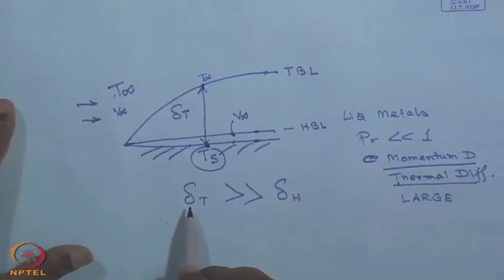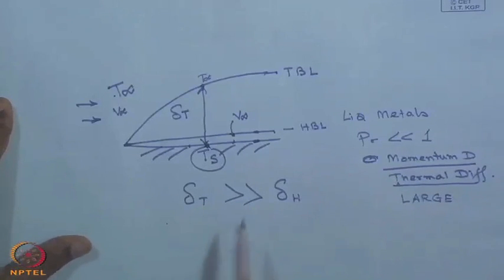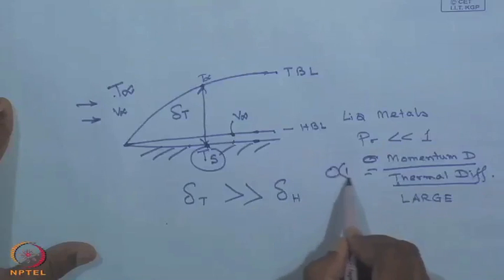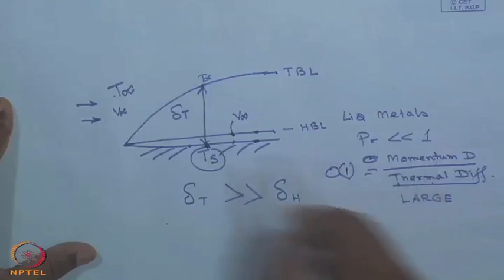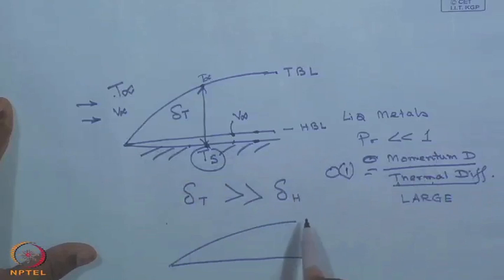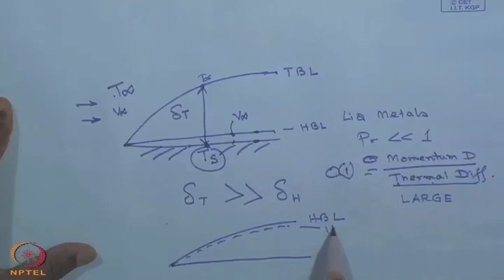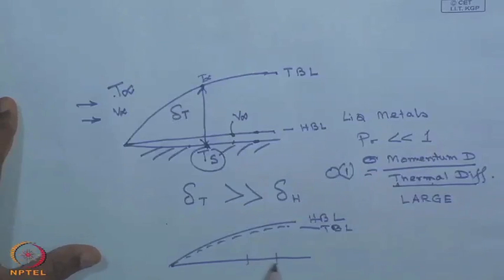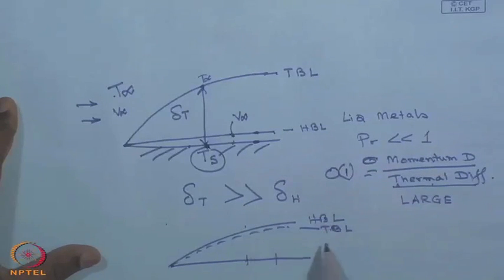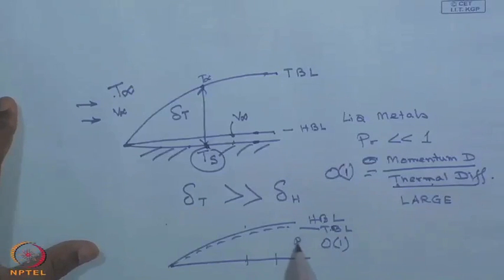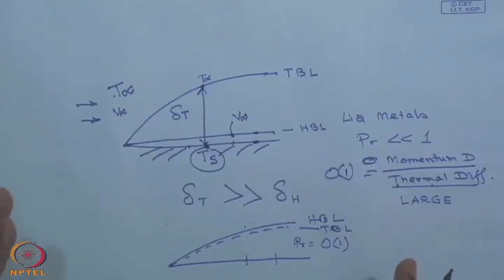If both hydrodynamic and thermal boundary layers are of order one — meaning Prandtl number ≈ 1 — both layers will be of approximately equal thickness at any given position. The Prandtl number, Schmidt number, and similar dimensionless numbers carry fundamental information about the physics of the process, allow comparison between seemingly different transport processes, and provide important quantitative information about relative process rates.